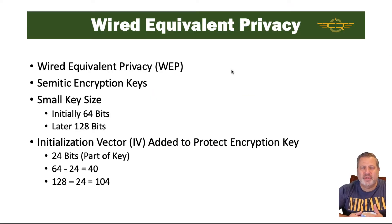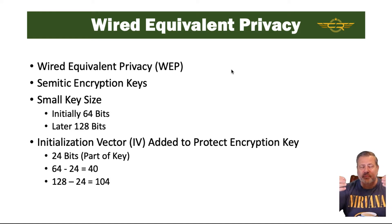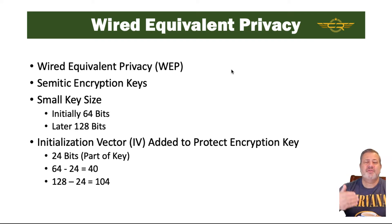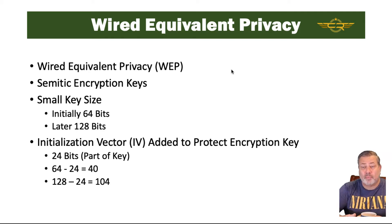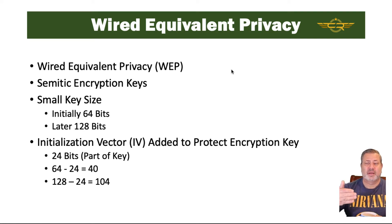Wired Equivalent Privacy, or WEP, was one of the initial encryption protocols put in place to protect us. It uses a symmetric key, meaning everyone has the same key. Initially, the encryption key length was required to be 64 bits, later increased to 128 bits, which was still way too small to make this thing secure.